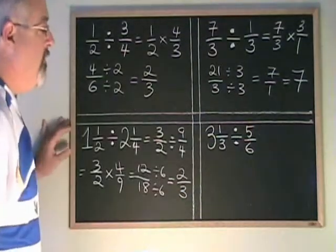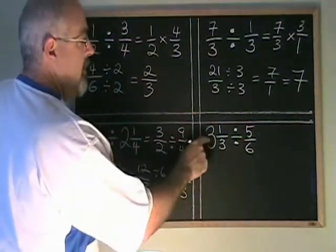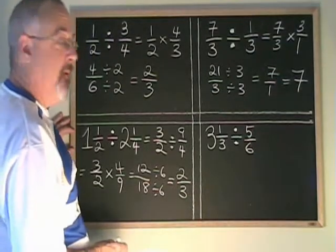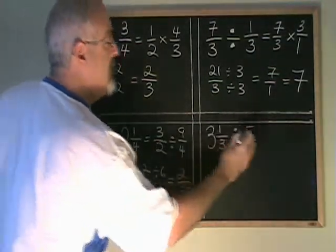Here's another one which has only one mixed number. 3 and a third can be converted into an improper fraction. 3 times 3 is 9 plus 1 is 10.